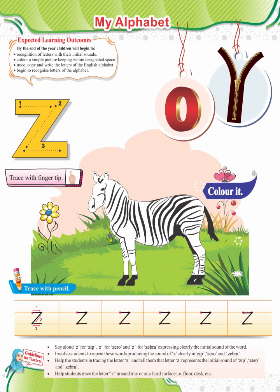Make them practice on sand trays to improve their gross motor skills. Clap for the children who are doing well with pronunciation and tracing. Also encourage the ones who are struggling to accomplish the task. Thank you.